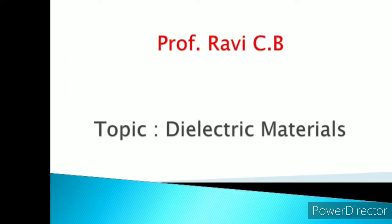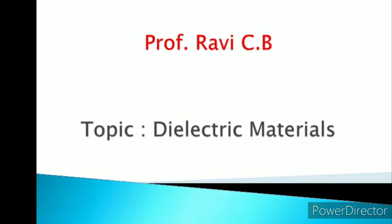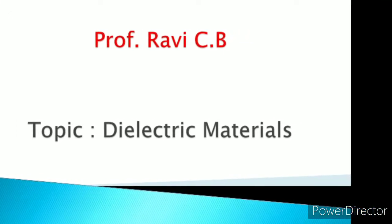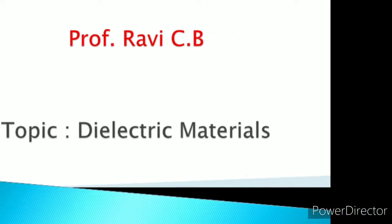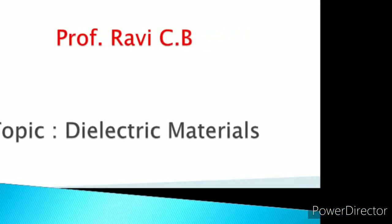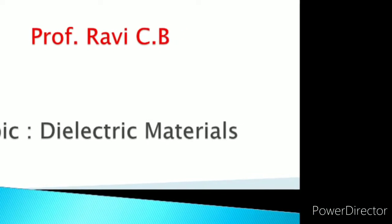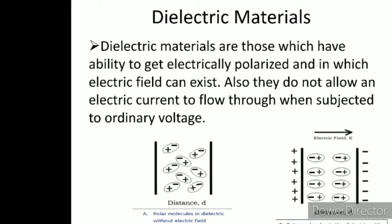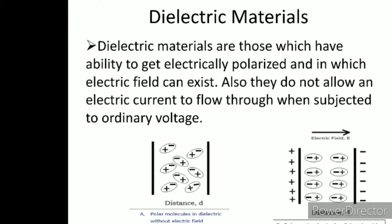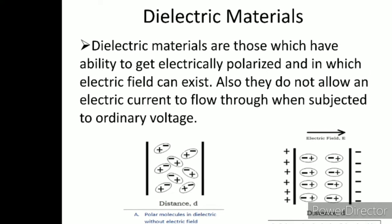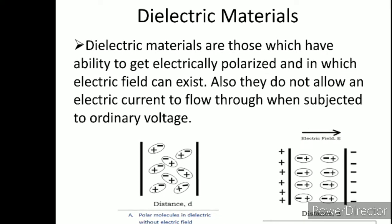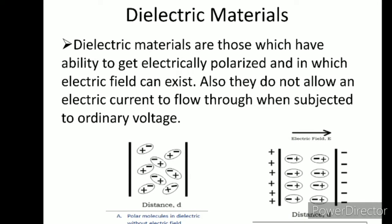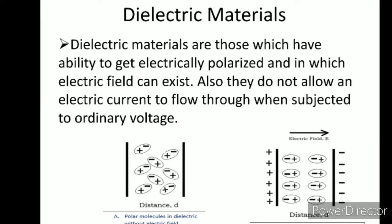Hello dear students, today we will discuss the next point in module 5, that is dielectric materials. Dielectric materials are those which have the ability to get electrically polarized and in which electric field can exist. They do not allow any electric current to flow through them.